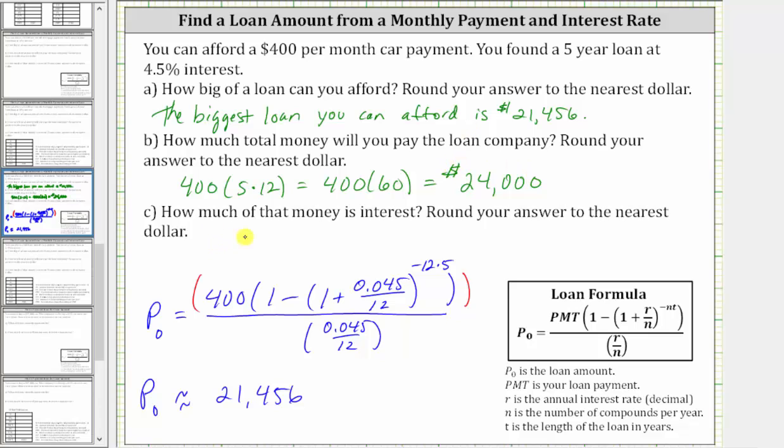For part C, how much of that money is interest? To determine the interest, we take the total money paid, which is $24,000, and subtract the loan amount, which gives us 24,000 minus 21,456, which is $2,544. I hope you found this helpful.